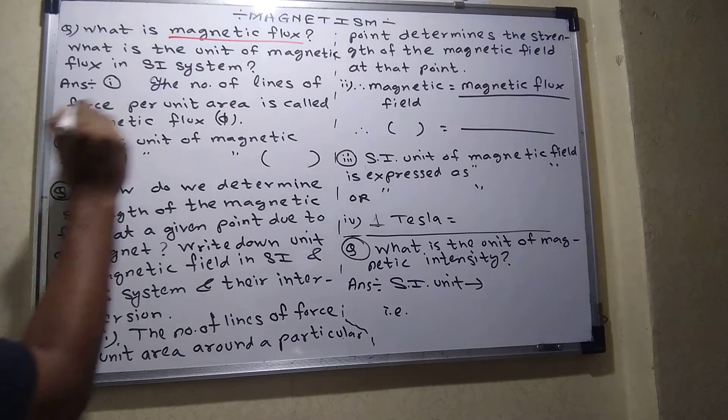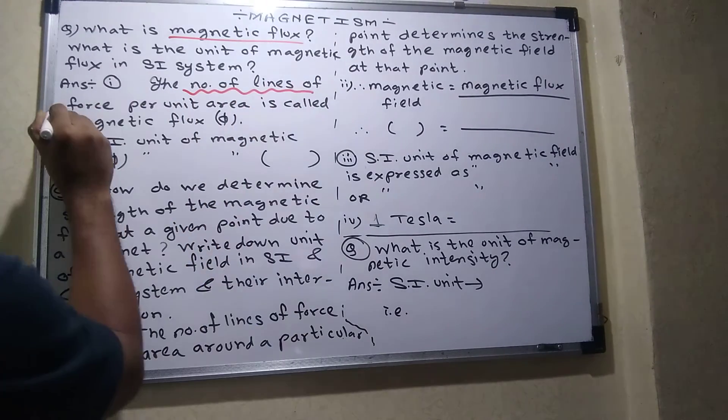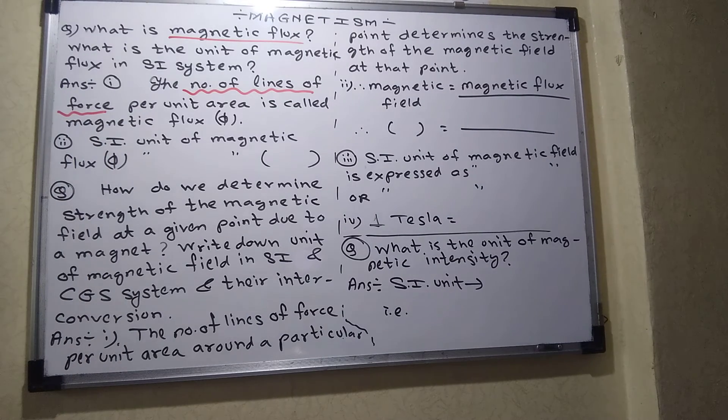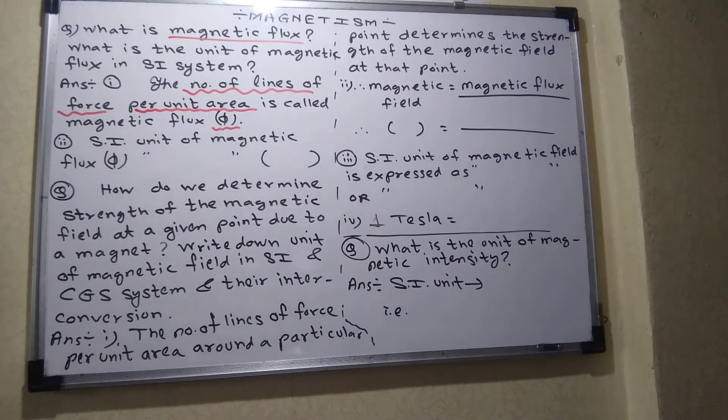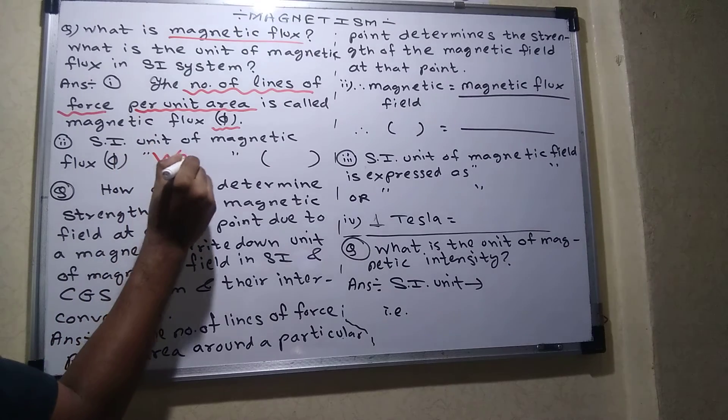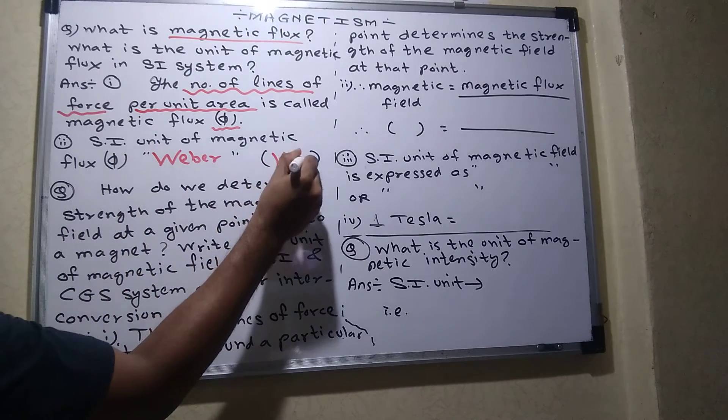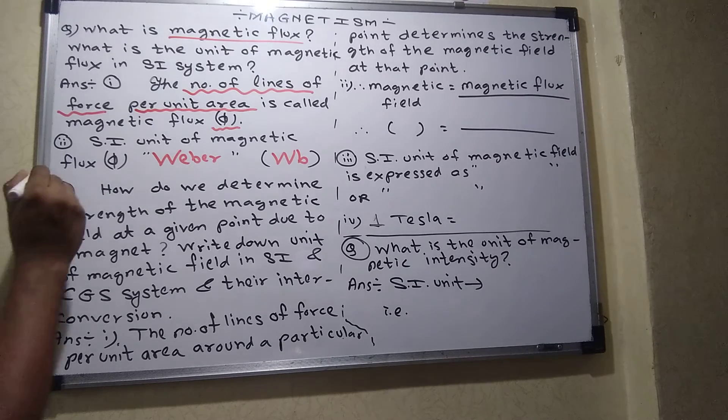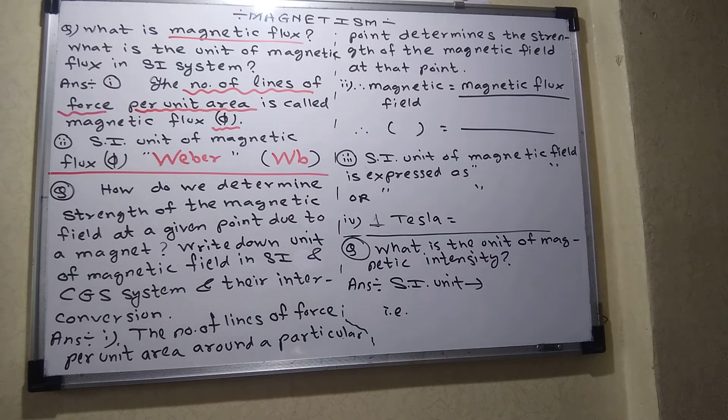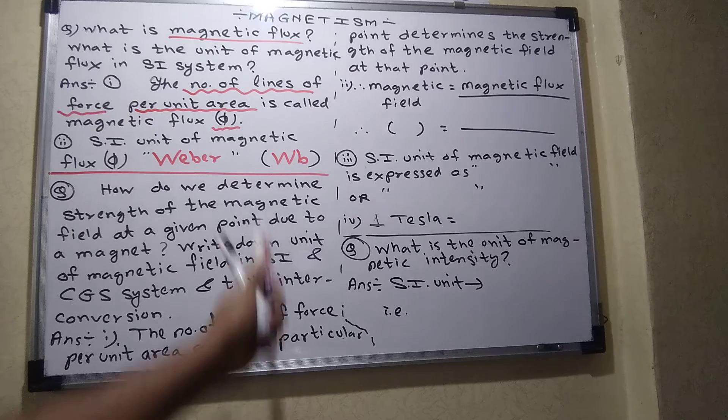So what is the question here? What is magnetic flux? The magnetic flux is defined as number of lines of force per unit area is called magnetic flux. And what is the unit? Unit is Weber. Now you have to remember this. The symbol is WB. Magnetic flux is defined as magnetic lines of force per unit area. What is SI unit? It is Weber. Symbol is WB.